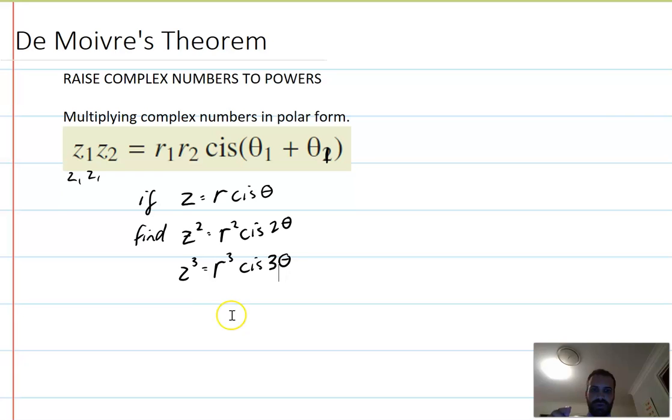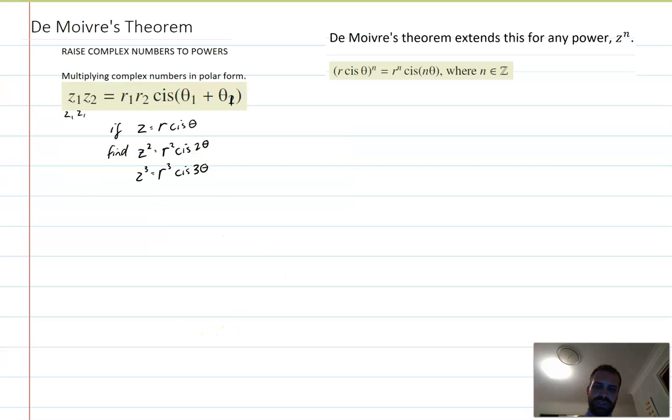So now we can just jump into De Moivre's theorem, the formula. De Moivre's theorem says that if you've got a complex number in polar form and you want to raise it to a power, it's going to be equal to the modulus to that power, cis the angle multiplied by whatever that power was, as long as those powers are integers. We can just do it now.